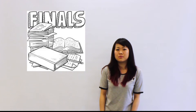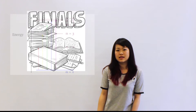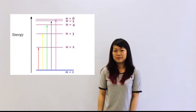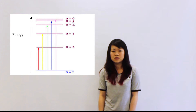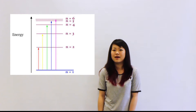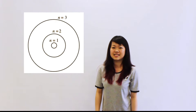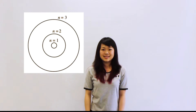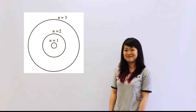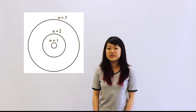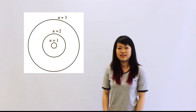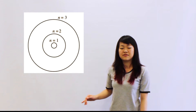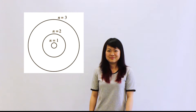We can describe your progress in school by using grades. Similarly, we can describe the energy levels in a molecule by using a number called the principal quantum number N. For the lowest energy state, N equals 1, and this state is closest to the nucleus. As N increases, the distance between the nucleus and the energy level also increases, and so does the energy.